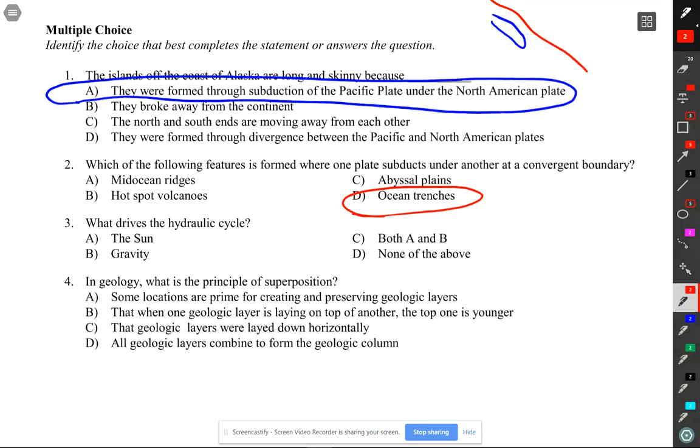Number three, what drives the hydrologic cycle? It's both the sun and gravity. The sun heats up the water, makes it evaporate and go up to the sky. Gravity makes it fall down. That's why it's the other part.